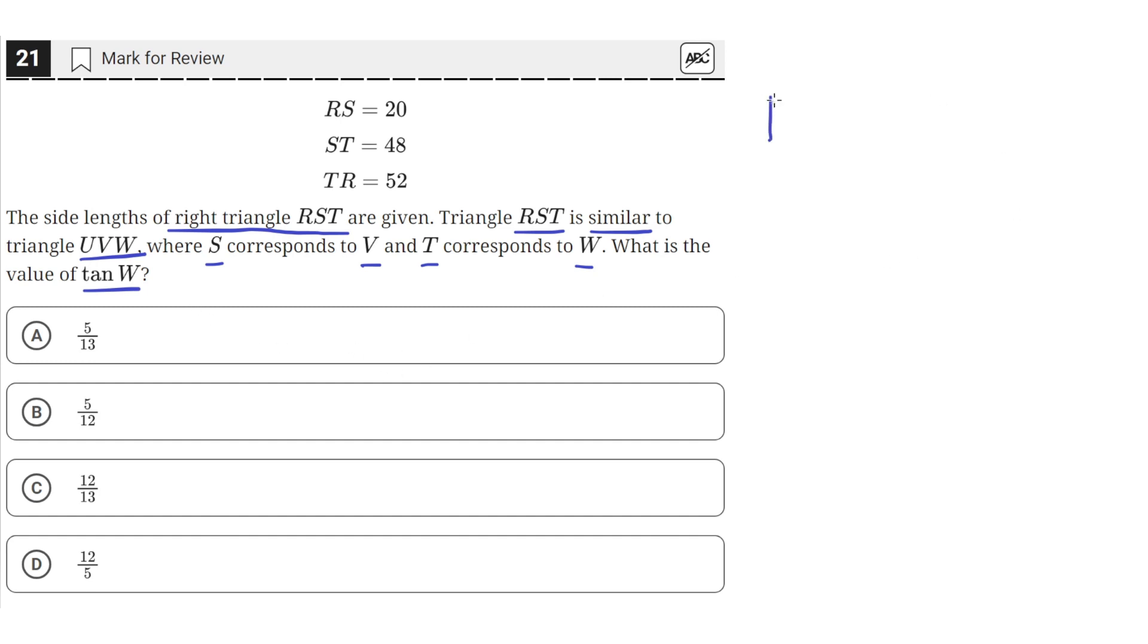So we have two right triangles. Let's draw them out. Triangle RST is similar to triangle UVW.